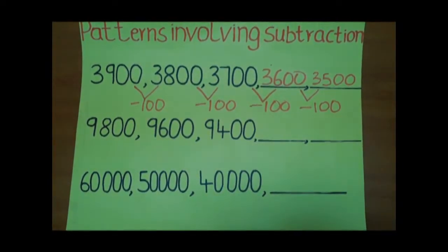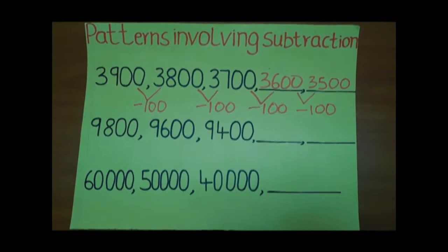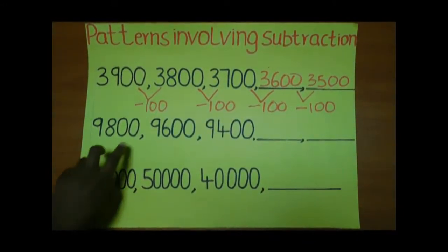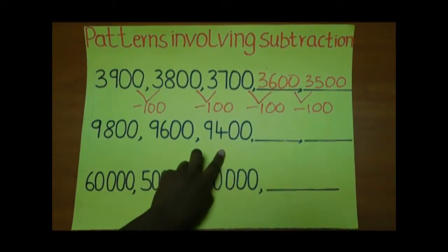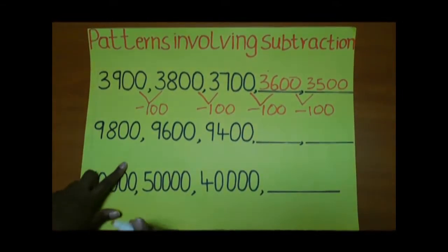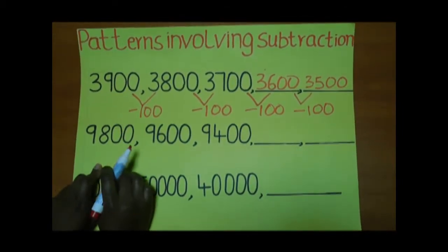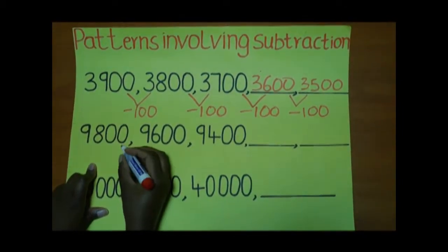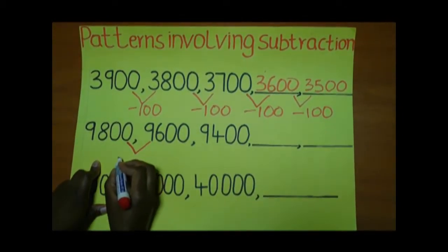In our second example, we have 9800, 9600, 9400, dash and dash. The difference between 9800 and 9600 is 200.